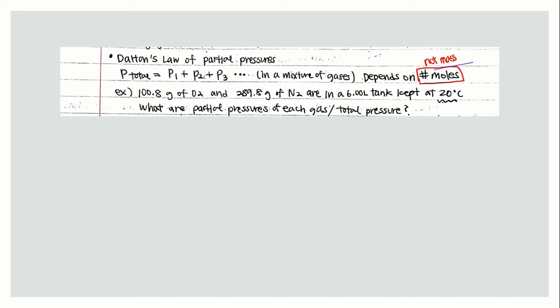You have an example here. 100.8 grams of O2 and 289.8 grams of N2 are in a 6.00 liter tank kept at 20 degrees Celsius. What are the partial pressures of each gas and the total pressure?